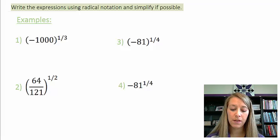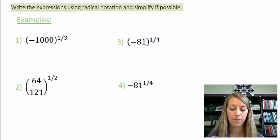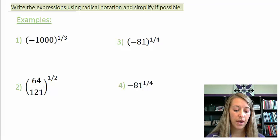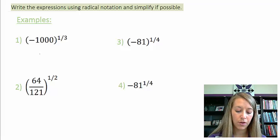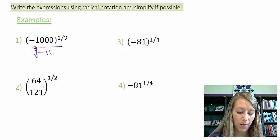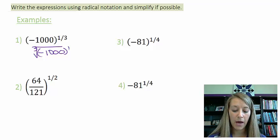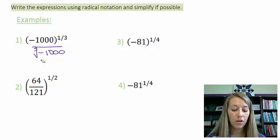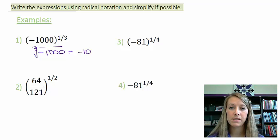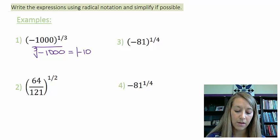A couple more examples with whole numbers and no variables — hopefully we can simplify these. First: negative 1000 to the one-third. This becomes the cube root of negative 1000 to the first power, but I can drop the first power since it doesn't help. The cube root of negative 1000 simplifies to negative 10, because negative 10 times itself three times gives negative 1000.